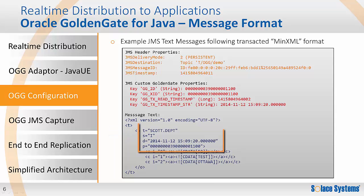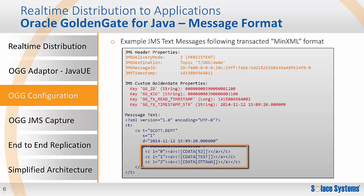Each operation element will have attributes that indicate the schema, table, operation type, date, and the position of the operation within the trail file. As a child to the operation element, there will be column elements as required by the operation, with before and after values as appropriate.